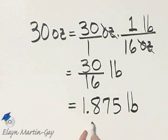So 30 ounces as a decimal and as pounds is 1.875 pounds.